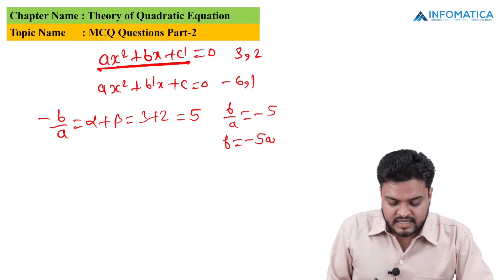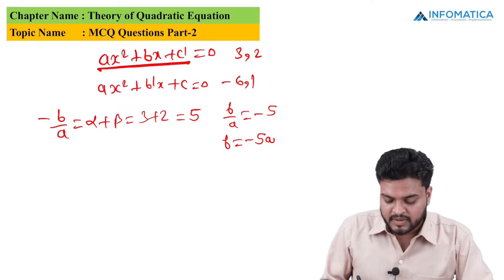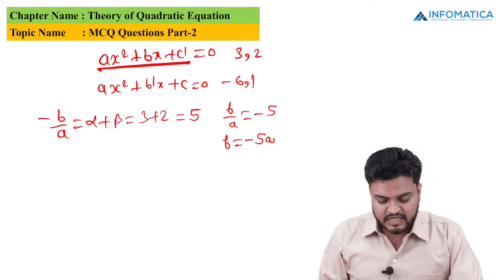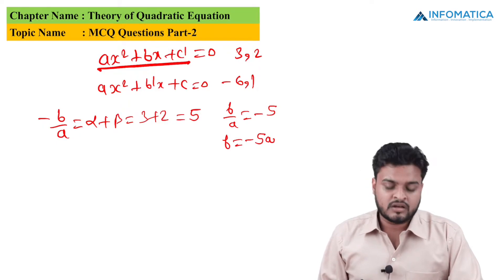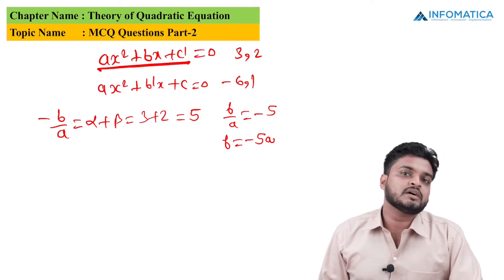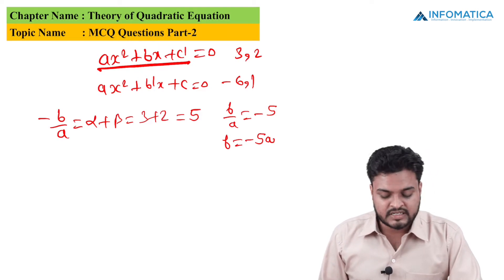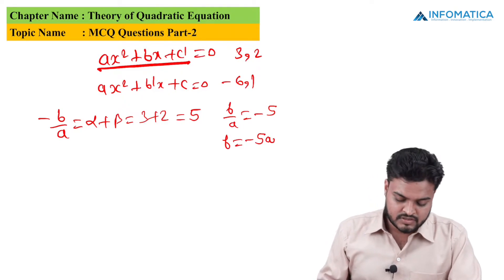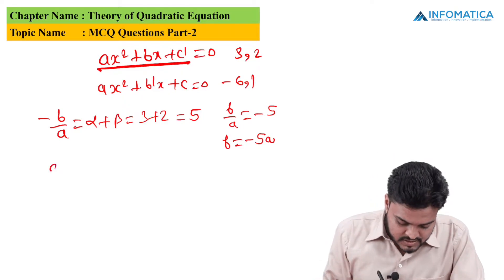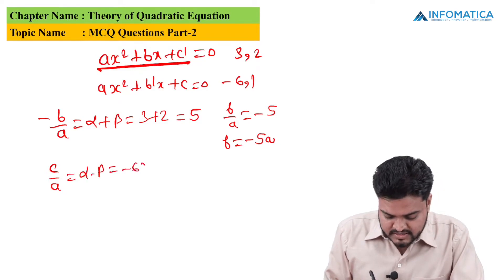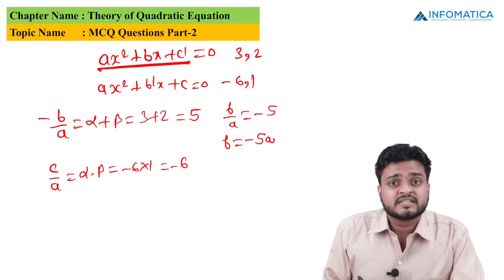For the second equation ax² + b'x + c = 0 with roots -6 and 1, since a and c are correct here, the product of roots gives the correct value. So c/a = alpha × beta = -6 × 1 = -6, meaning c = -6a.